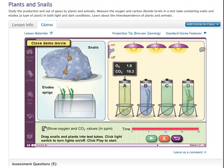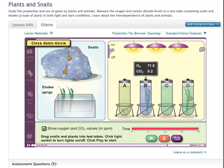use the probe. The numbers tell you how much oxygen and carbon dioxide is in the tubes, in parts per million. The probe can go in any tube.